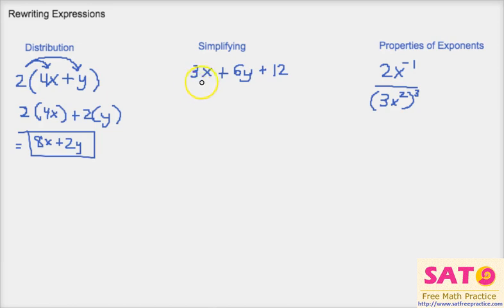Well they don't share a common variable because this has x, this has y, and this doesn't even have a variable. But they do all share a number: 3, 6, and 12. And if we think back to our grade school days, 3, 6, and 12 are all multiples of 3.